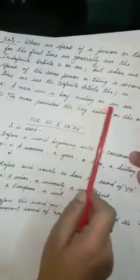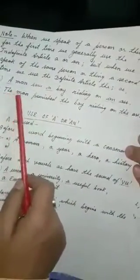When we speak of a person or thing for the first time, we generally use the indefinite article A or AN. But when we speak of the same person or thing a second time, we use the definite article THE. As given, a man saw a boy riding on an ass. The man punished the boy riding on the ass. First time I have to use indefinite, and after that I am repeating the same thing, then I have to put THE.